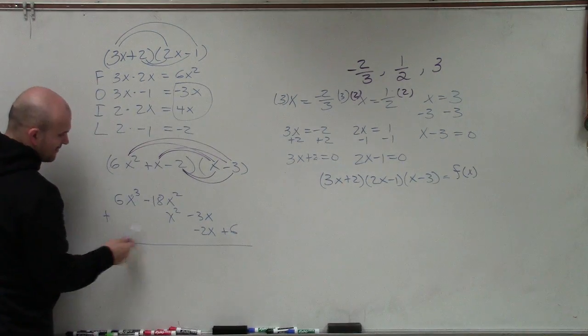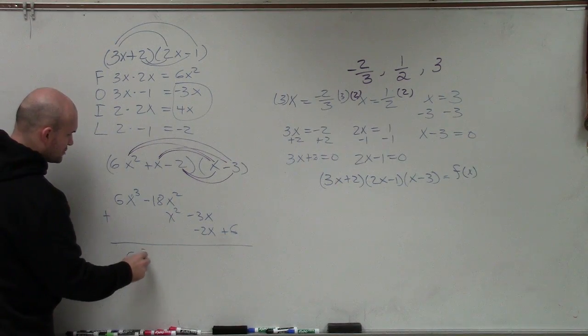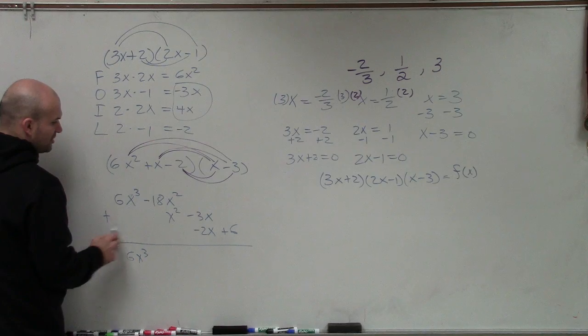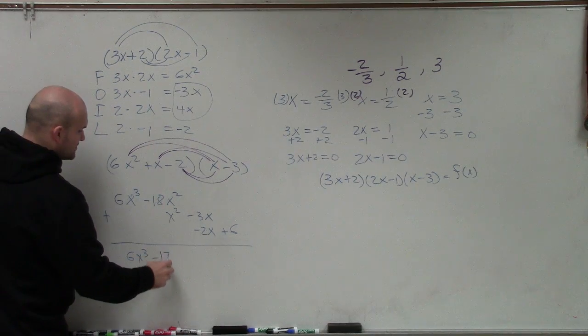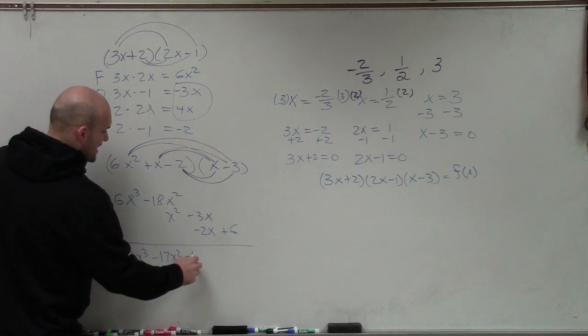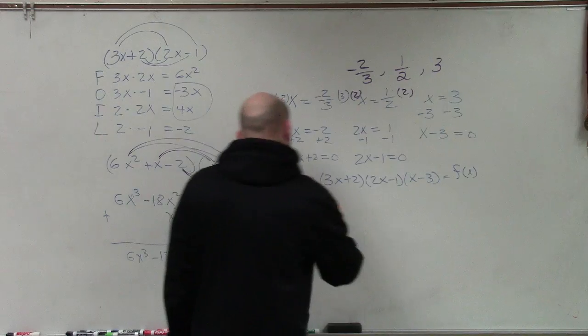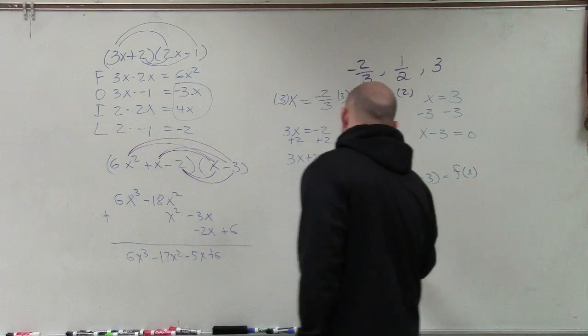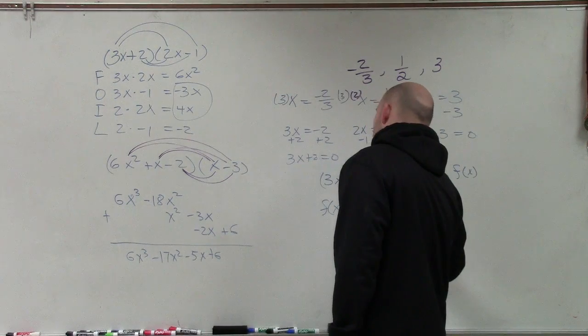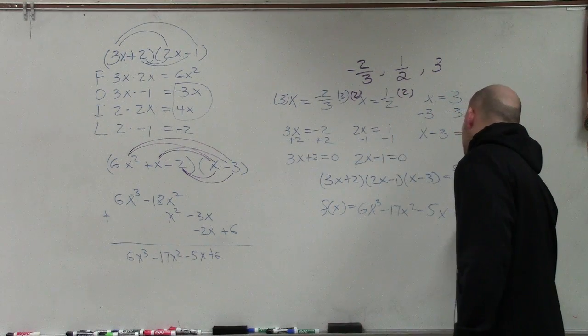Then what I'm going to do is I'm just going to add vertically. 6x cubed, there's really no other term, so that's going to be 6x cubed. Negative 18x squared plus x squared is going to be a negative 17x squared. Negative 3x plus negative 2x is a negative 5x. And plus 6. So therefore, my function, which I'll write first, f(x) is going to equal 6x cubed minus 17x squared minus 5x plus 6.